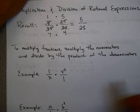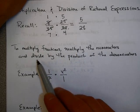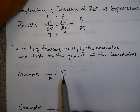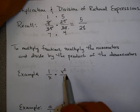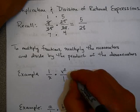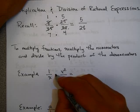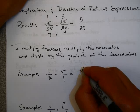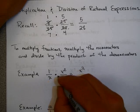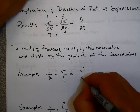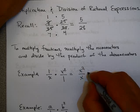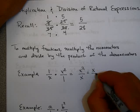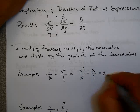To multiply fractions, we just multiply the numerators and divide by the product of the denominators. How does this work for rational expressions? You could say 1 times x squared is x squared, and x times 1 is x. Don't forget to simplify: x squared over x would be x over 1, or just plain old x.